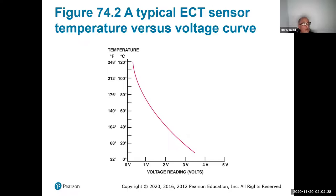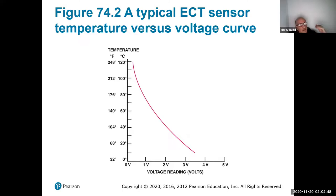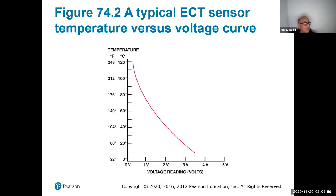This sensor is what they call a thermistor — it has a very different type of resistor. Resistors, as we know from electrical theory, increase in resistance as we heat them up. But with the thermistor, it goes the opposite: it has high resistance when it's cool or cold, and then it actually drops its resistance in the process of heating up. This is important because when you start doing your measurements, you need to know that it starts high when it's cold, and then you start doing your mapping.